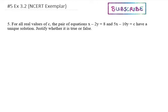Justify whether it is true or false. For a unique solution, we know that it is of the form a1 over a2 is not equal to b1 over b2. This is the general condition for unique solution. Let's see whether it is true or not.